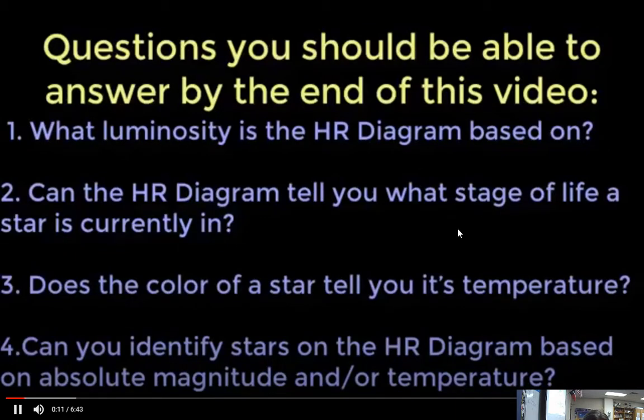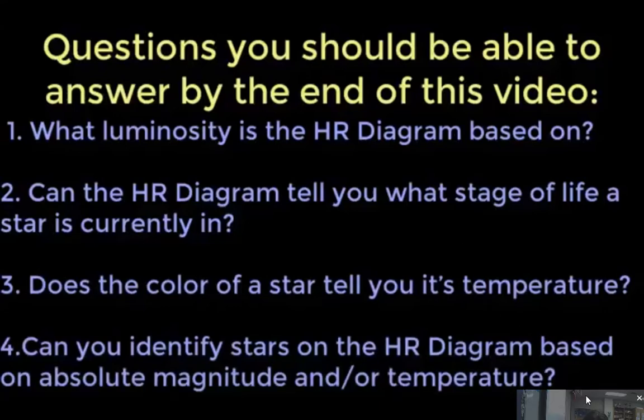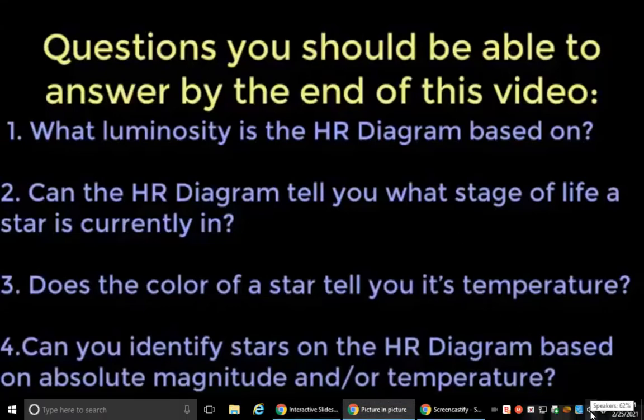What luminosity is the HR diagram based on? Number two, can the HR diagram tell you what stage of life the star is currently in? Number three, does the color of the star tell you its temperature? And number four, can you identify stars on the HR diagram based on absolute magnitude and or temperature?